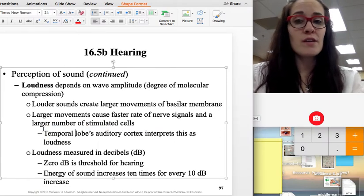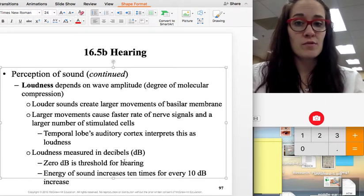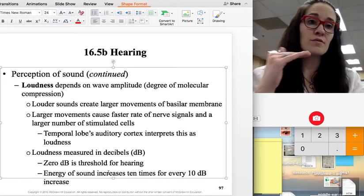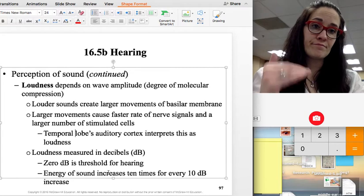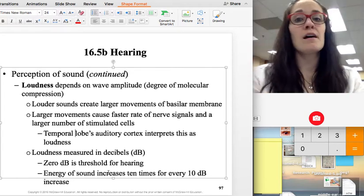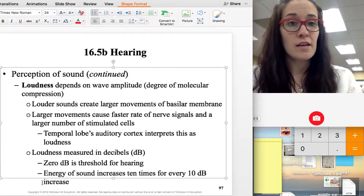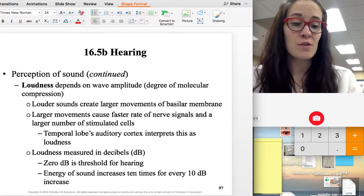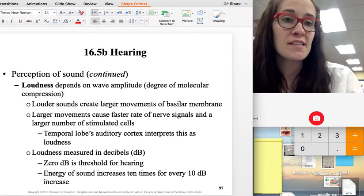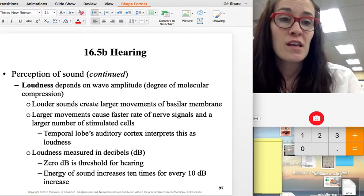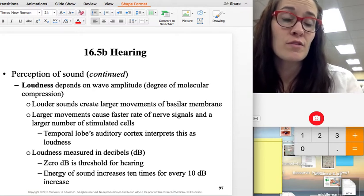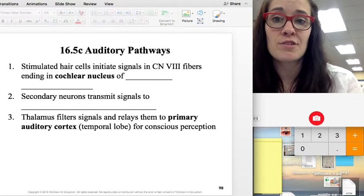And we measure loudness in decibels. Zero decibels is the lowest that we can hear. And every 10 decibels, it increases 10 times the energy within that. Normal speaking is around 60 decibels. If you get around 90 decibels for a prolonged period of time, that can damage your hearing.